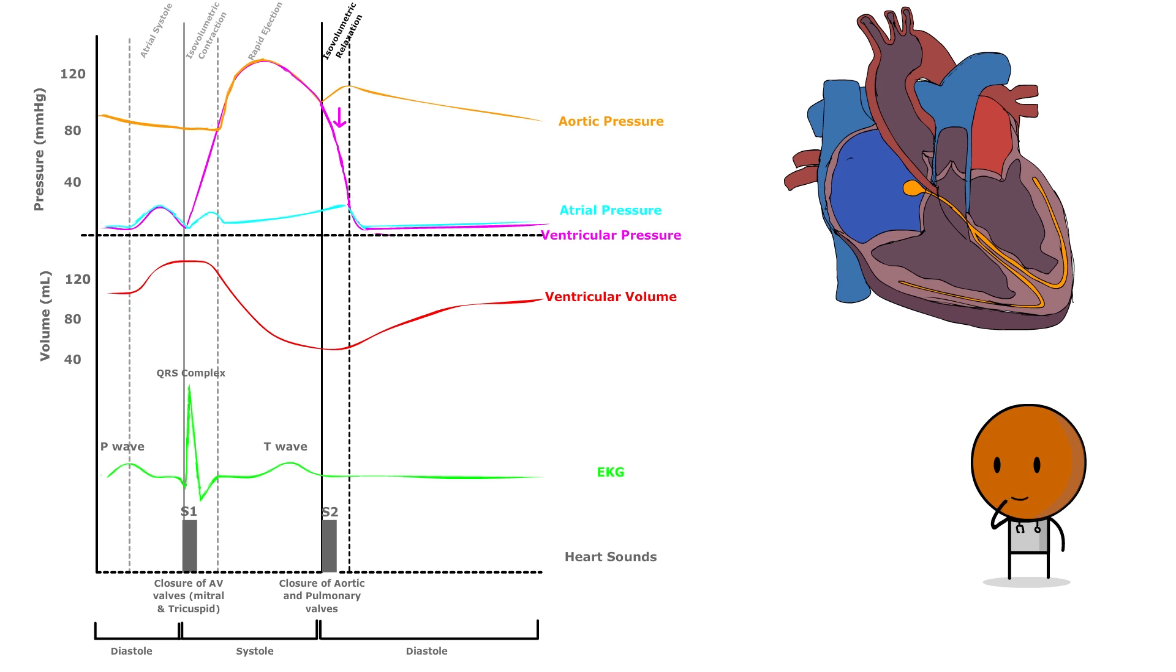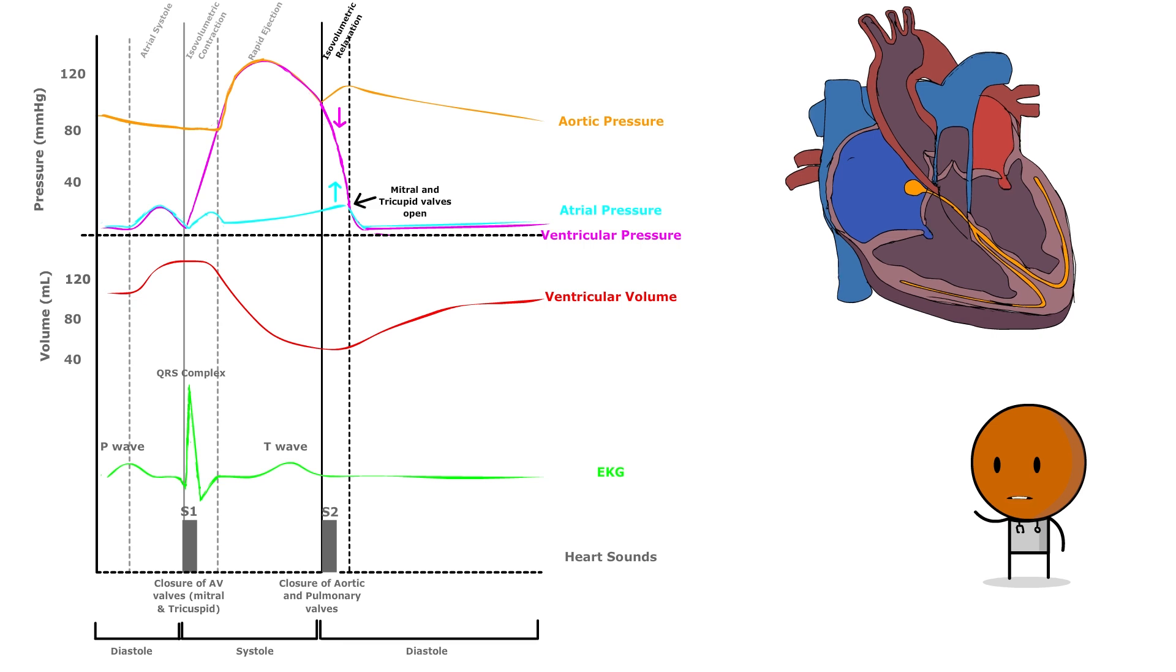Simultaneously, the atria fill with blood, causing a gradual rise in atrial pressure. The cycle moves towards completion as the ventricular pressures dip below the atrial pressures, resulting in the AV valves opening and blood descending into the ventricles by gravity, initiating the passive filling phase.